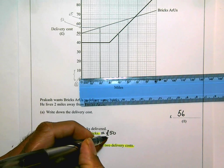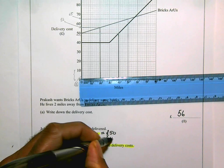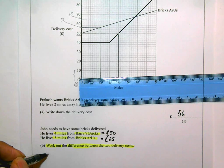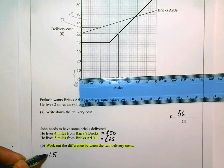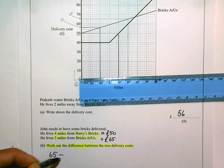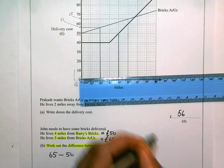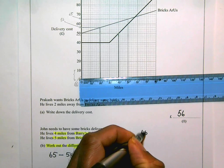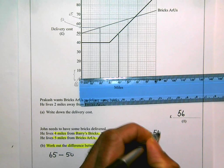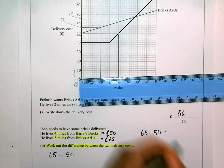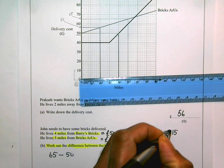So the difference is going to be 65 take away 50. If I write it here, you see better, 65 take away 50. And 65 take away 50 is 15. 15 pounds. And that's what I'm going to write in my answer space. 15 pounds.